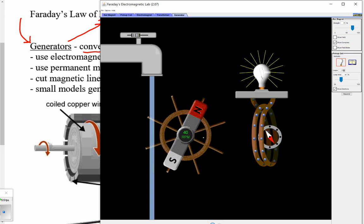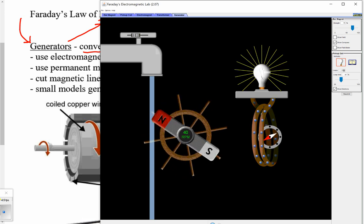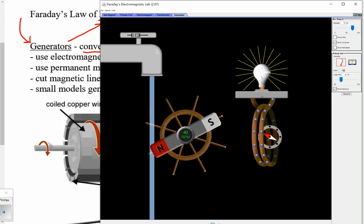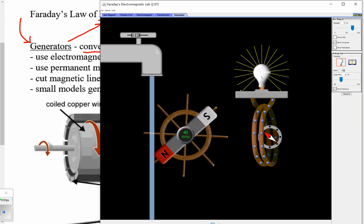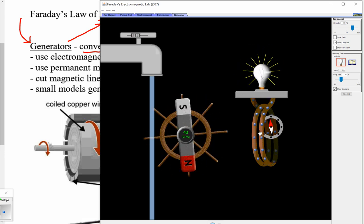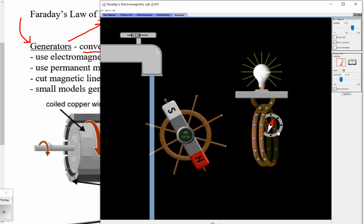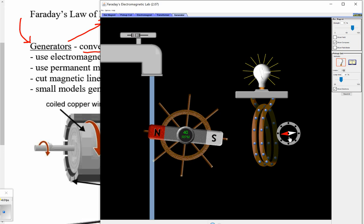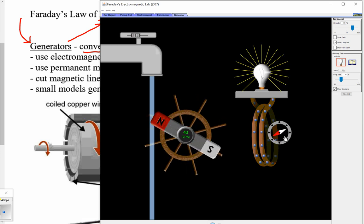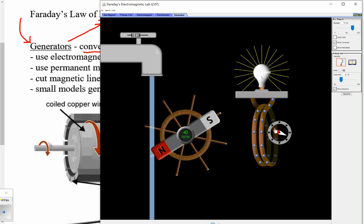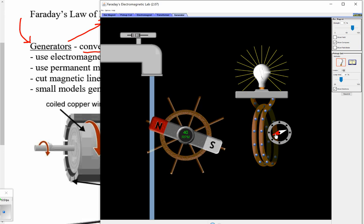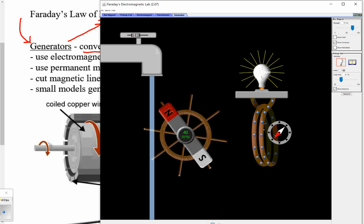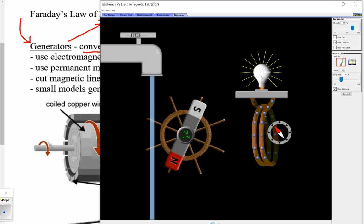And if you notice, as the water falls and it turns this paddle that's in the problem, we're able to see, and for some reason my mouse is no longer working. I can grab the compass at least. Look at the compass inside the coil, and you can see the changing magnetic field inside the coil, and that changing field is what induces the electrons to move back and forth.